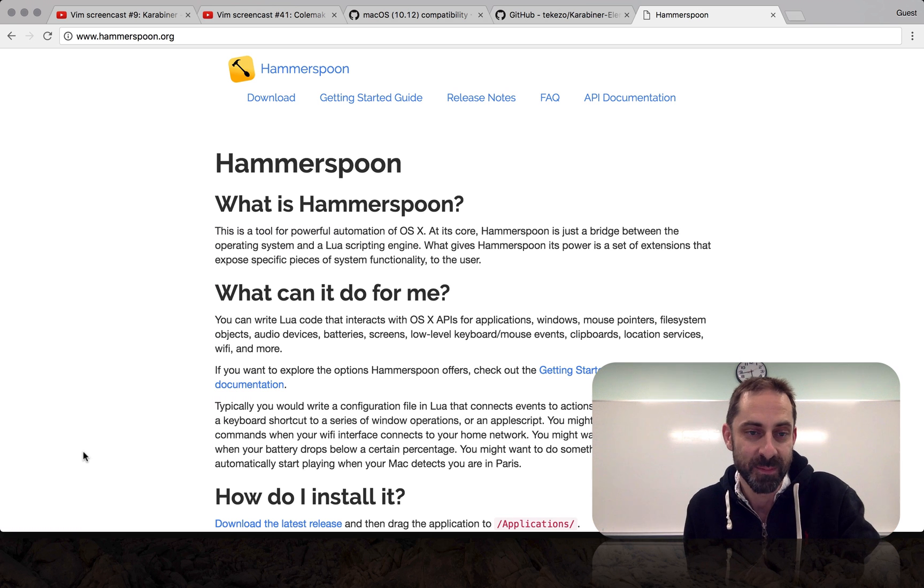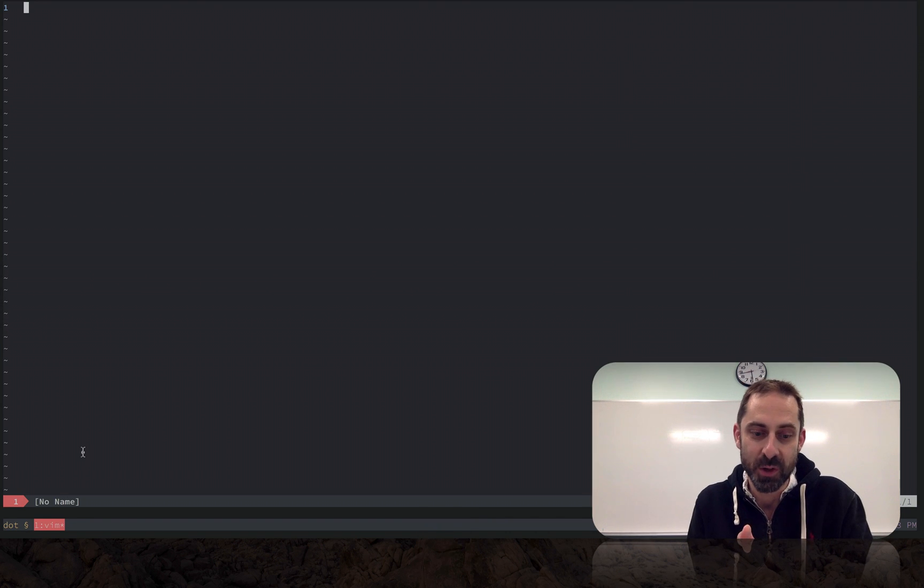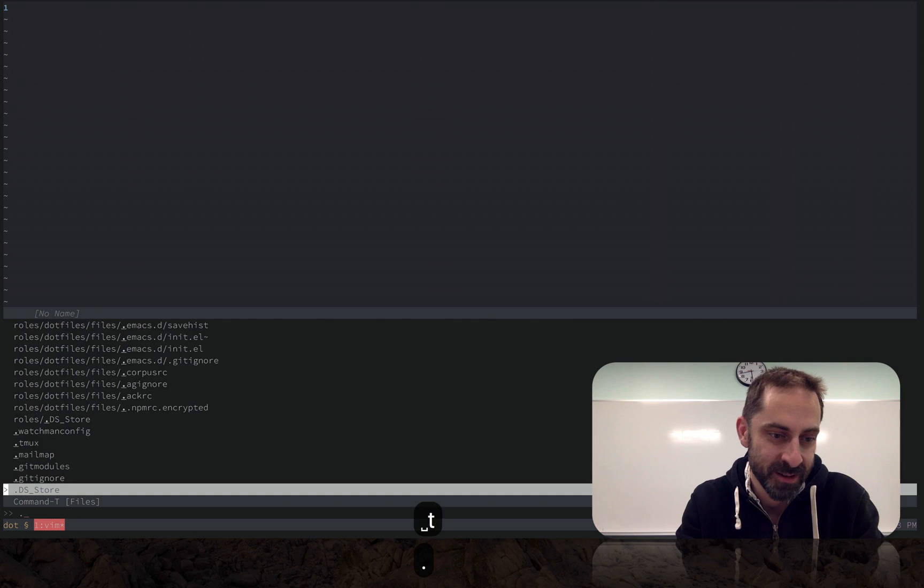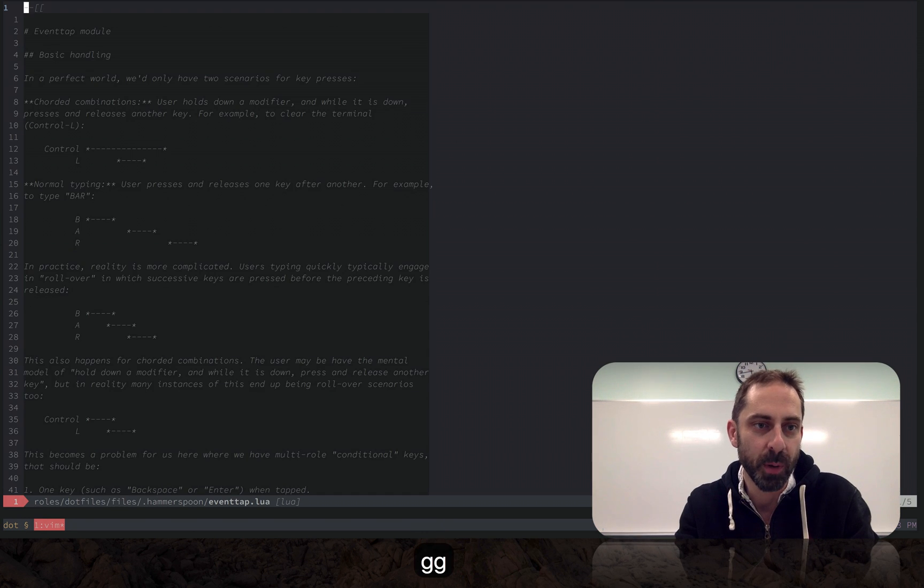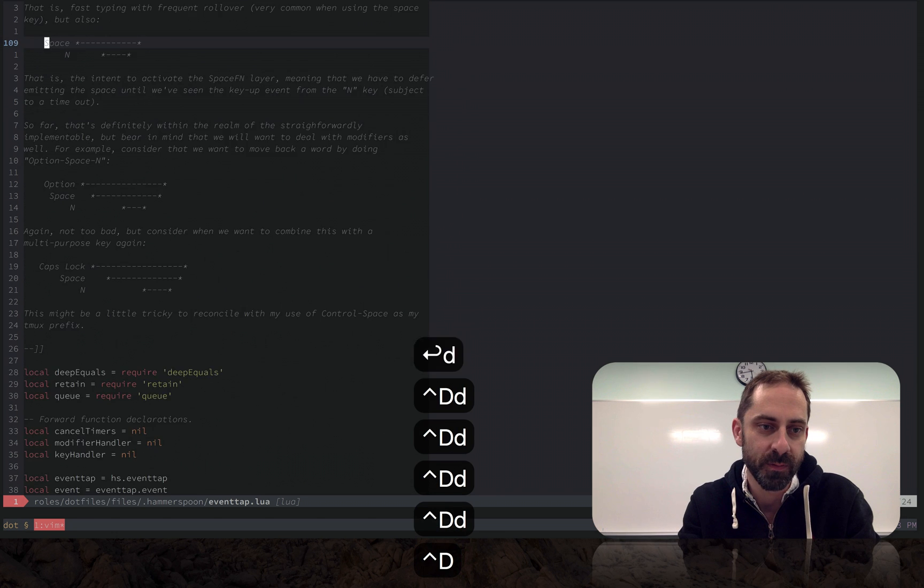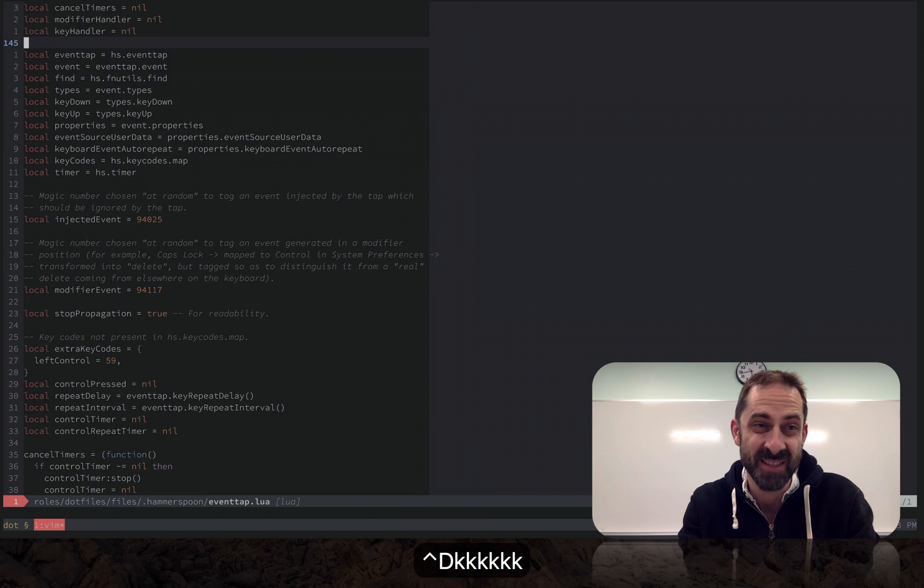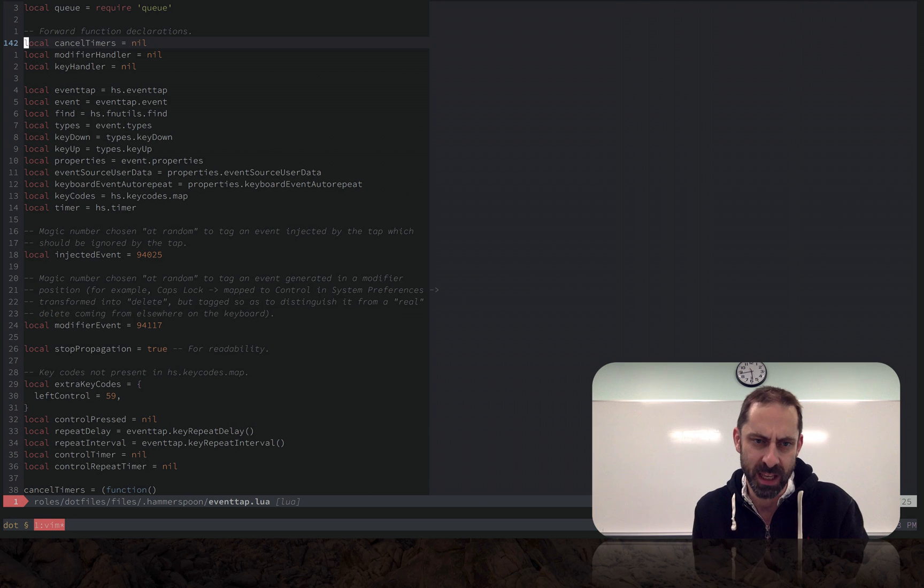So let's have a look at what I've done in Lua here. I'm not a Lua programmer and everything that I've done with it has been kind of self-taught in the service of getting my Hammerspoon config to do the things that I want. Basically, I've made this file here called eventtap.lua that accesses this eventtap API to recreate the functionality that I need.